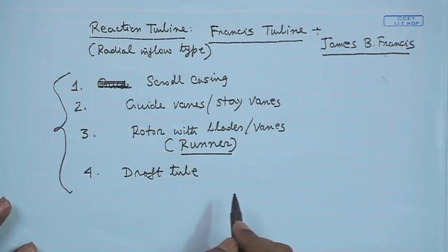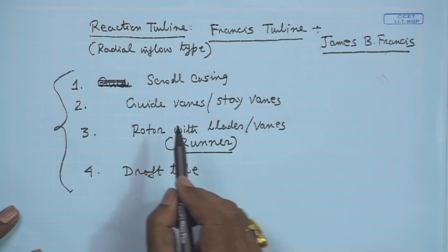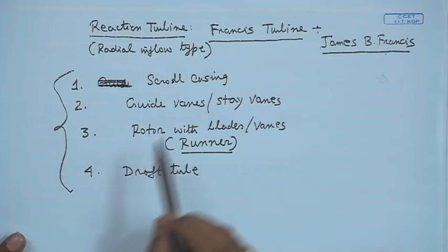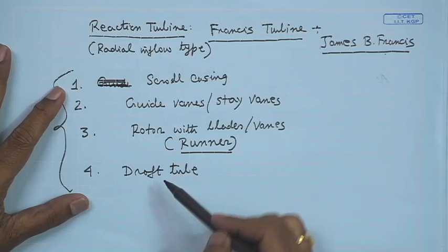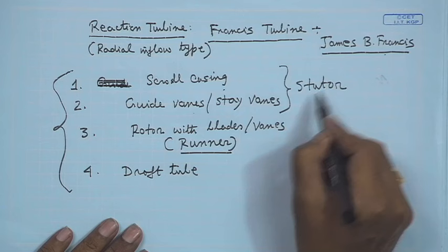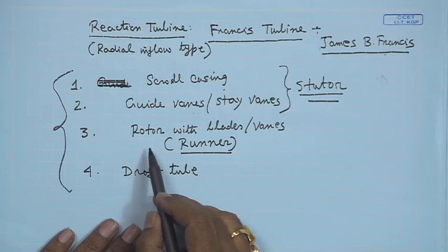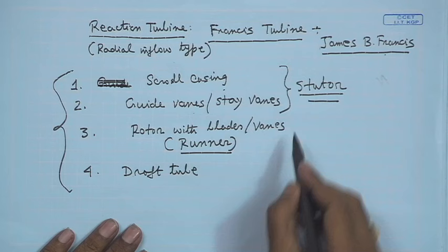Flow enters first in the scroll casing, then passes through the guide vanes or stay vanes — these are fixed vanes and constitute the stator of the machine. Then it enters the rotor, which is mounted on the shaft and rotates at constant angular speed. The blades and vanes of the rotor are known as the runner — this is the rotor of the machine.